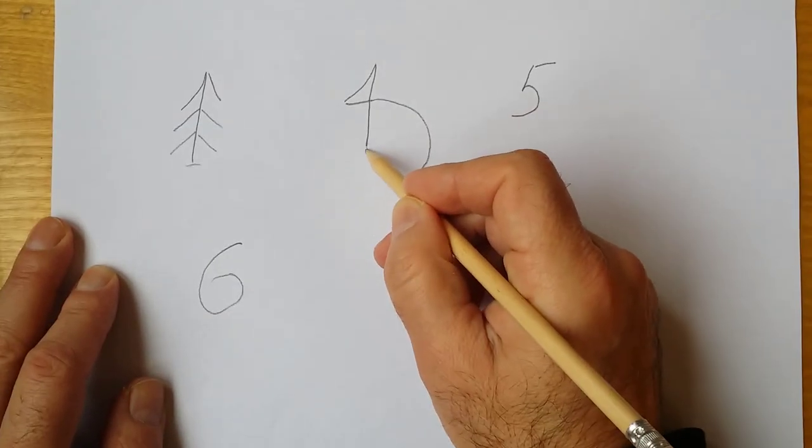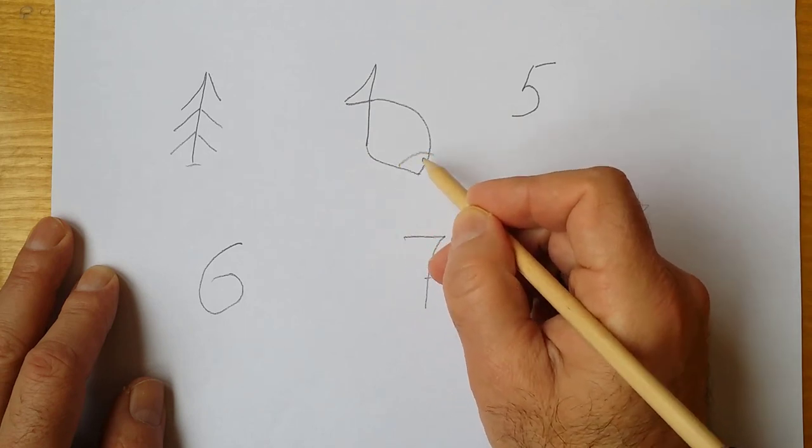And then number 4 turns into an interesting fish. We draw a body of fish, eyes.